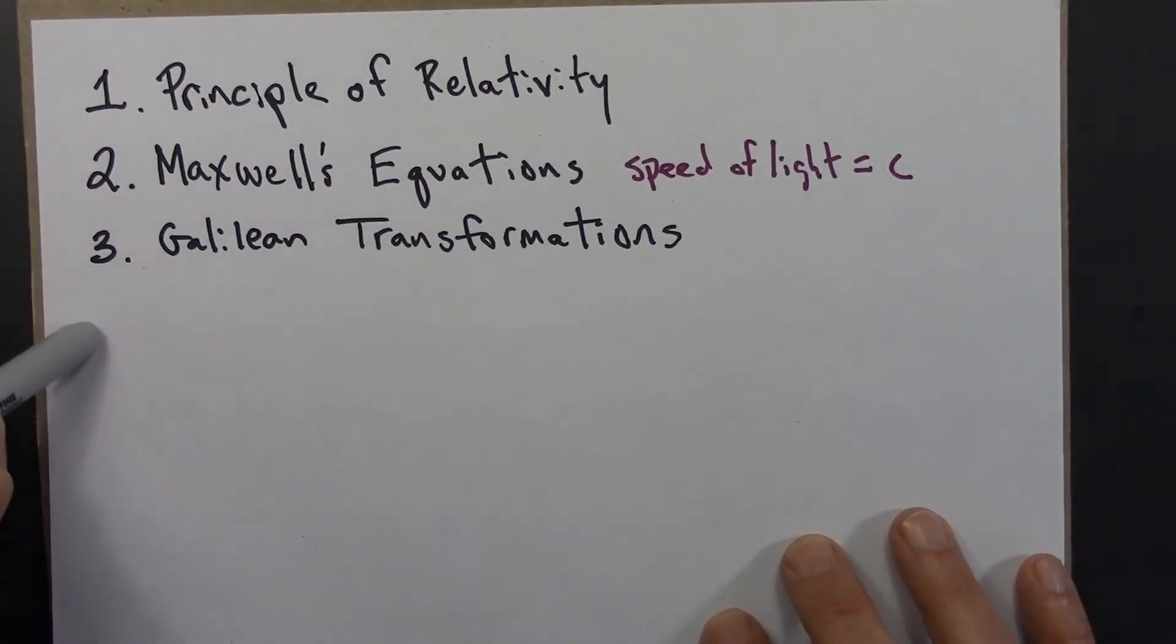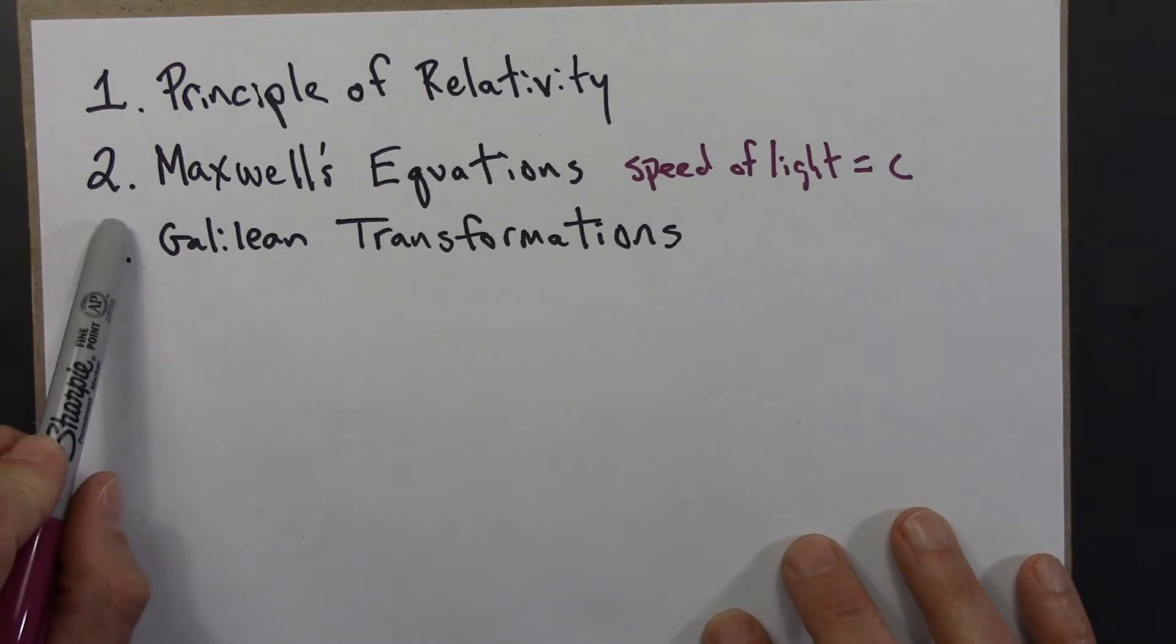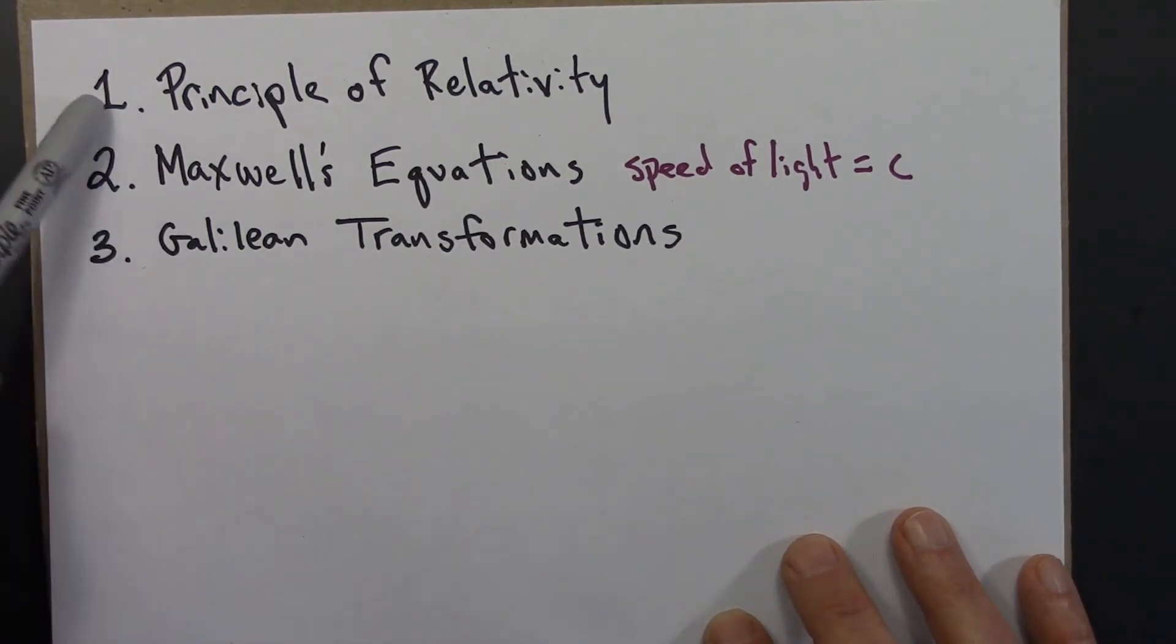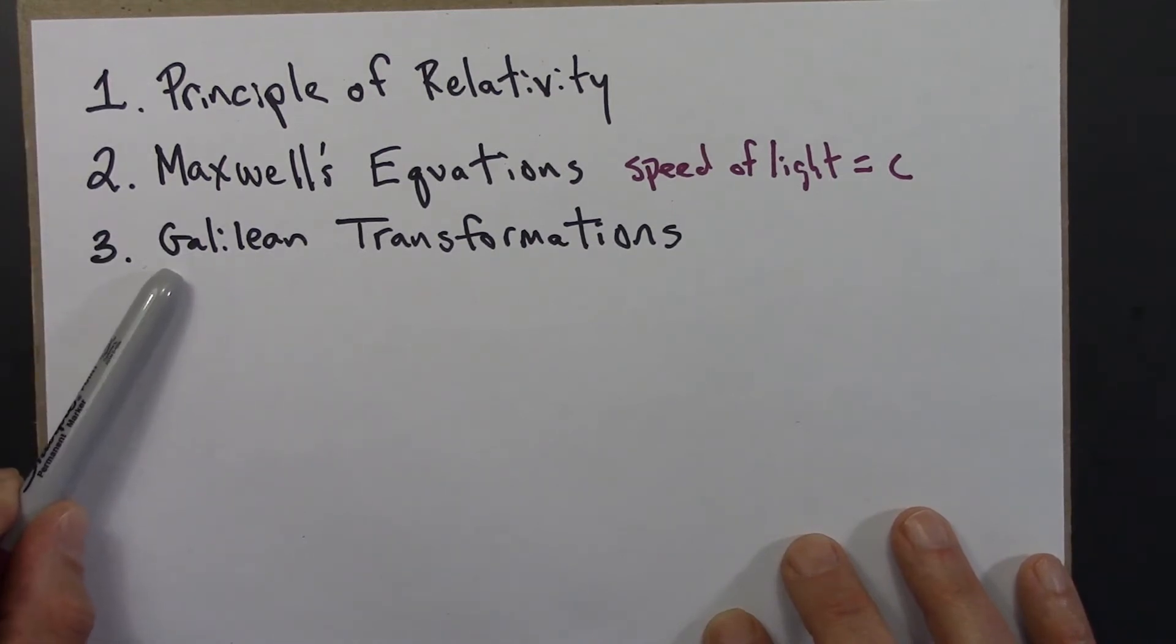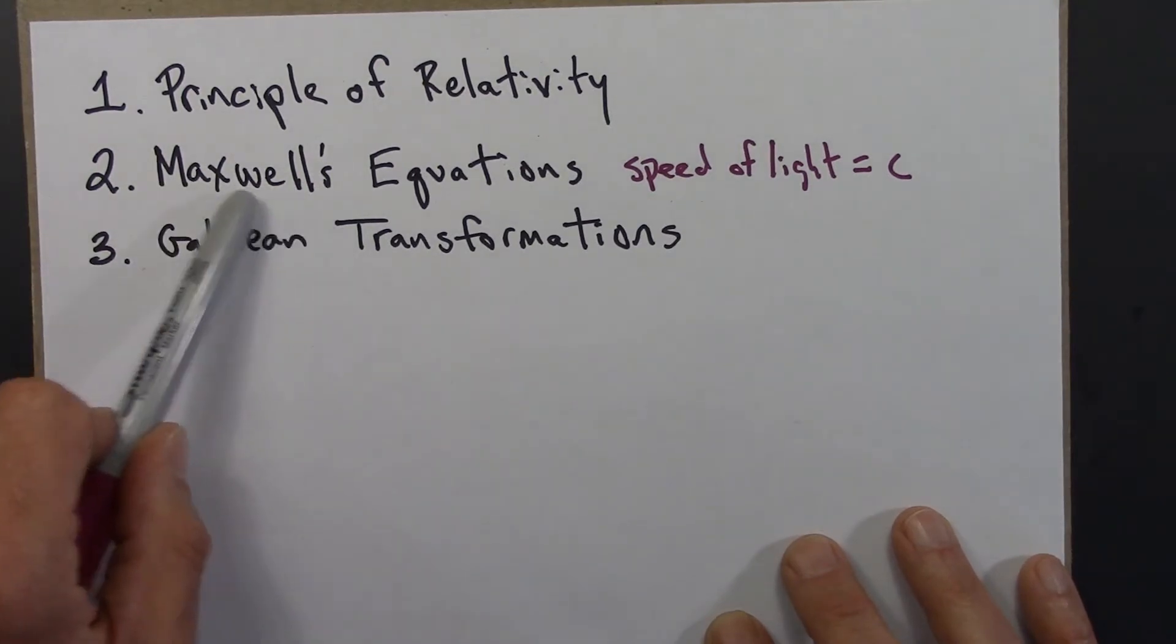So these three statements can't all be correct at the same time. So most physicists thought, well, the principle of relativity, that seems about as solid as you can get. Galilean transformations seem self-evident. There must be something funny with Maxwell's equations.